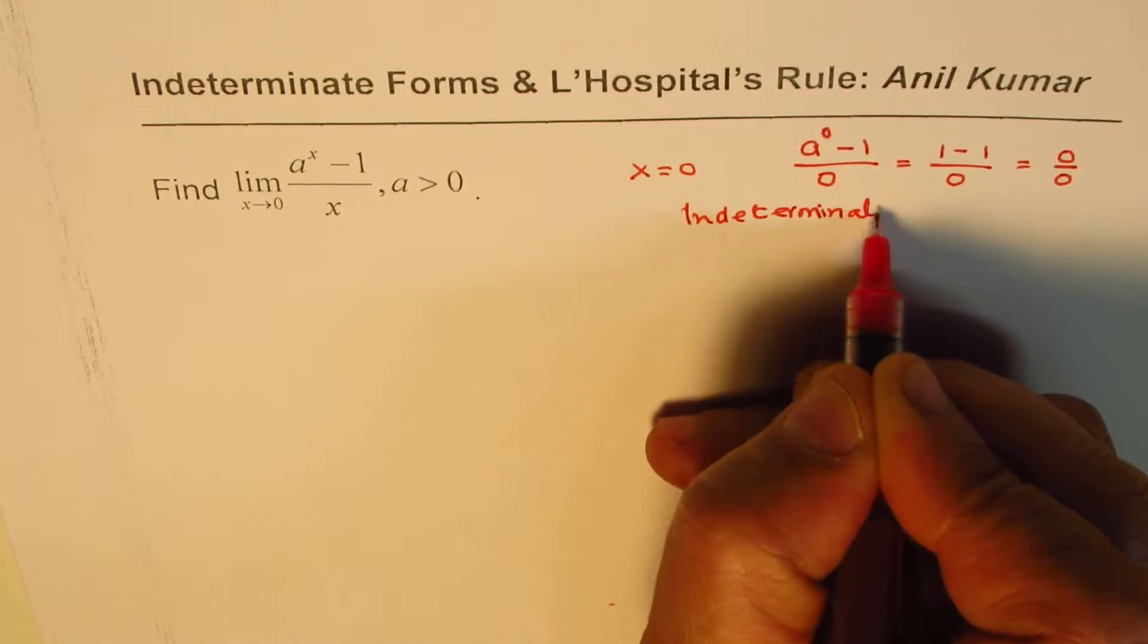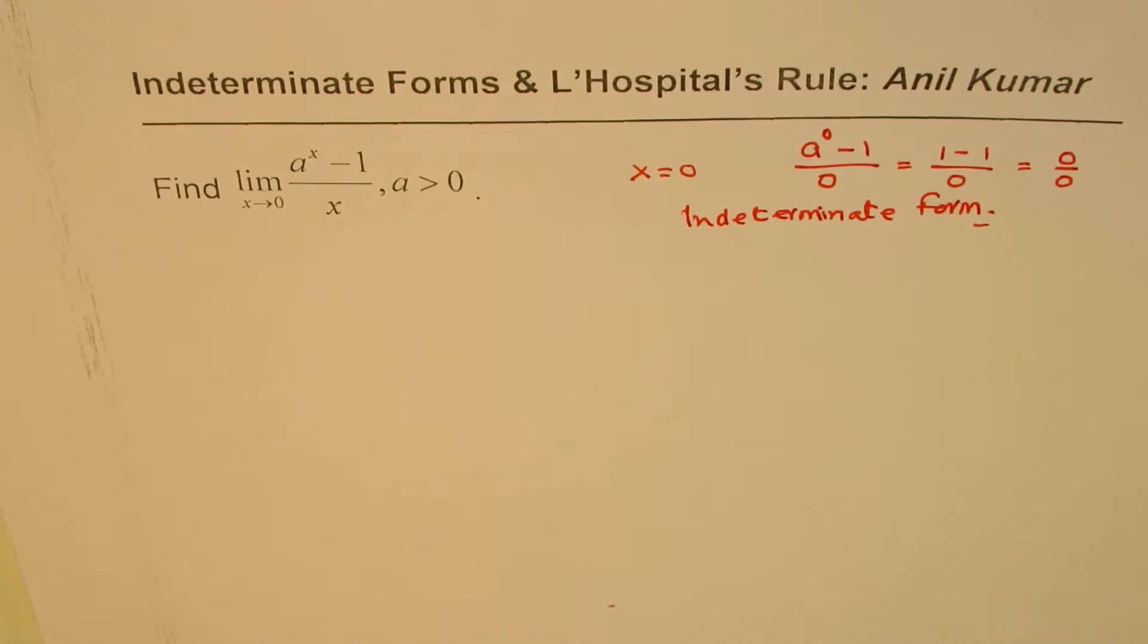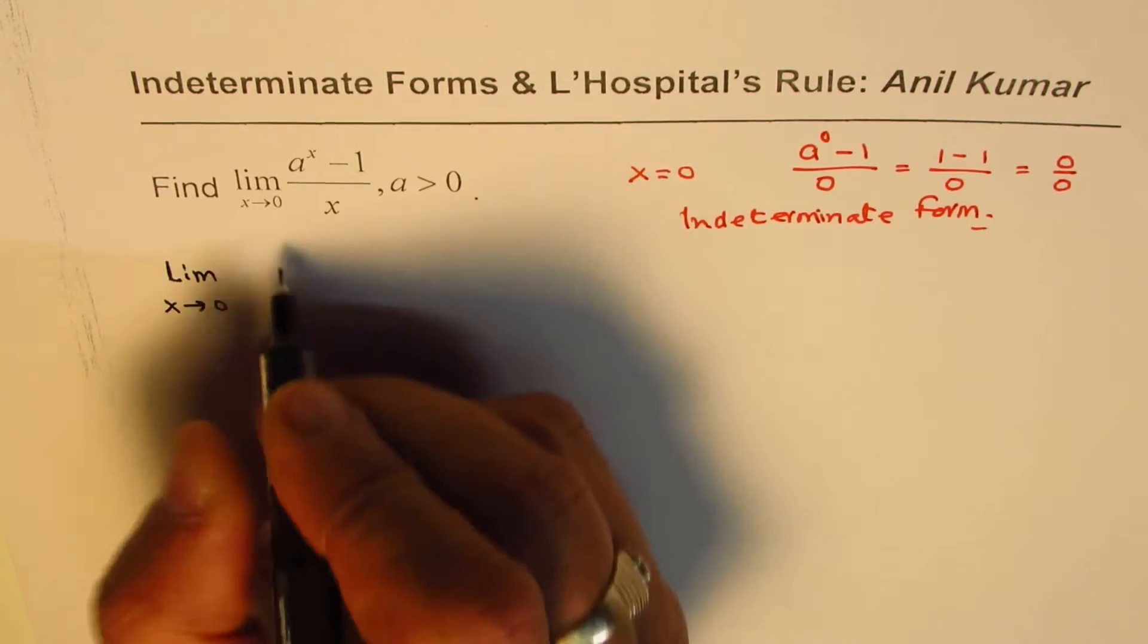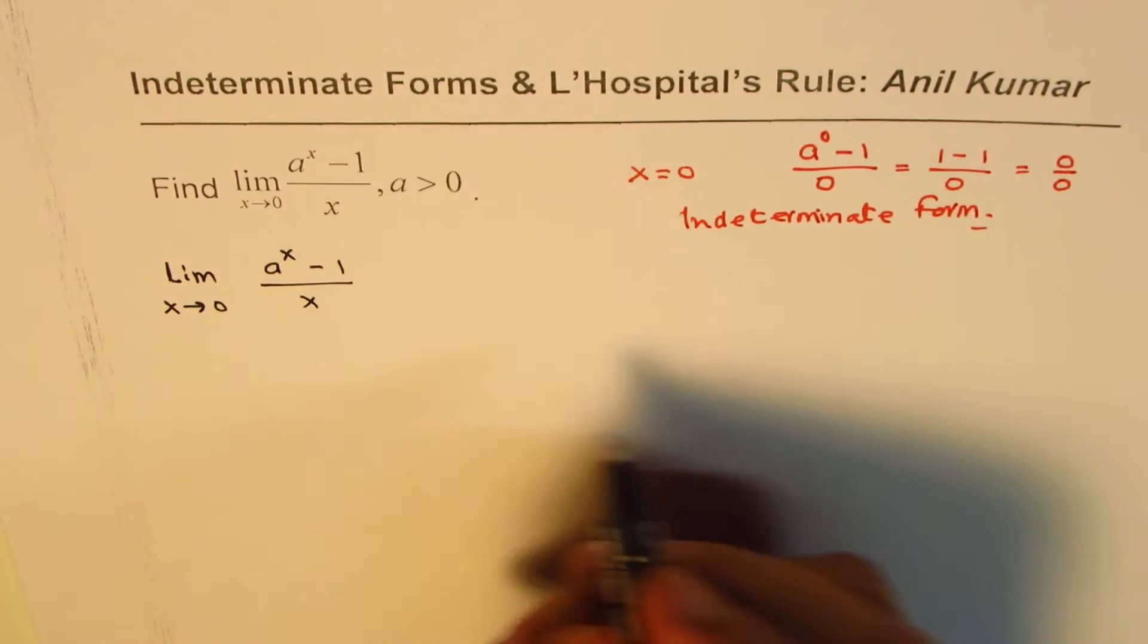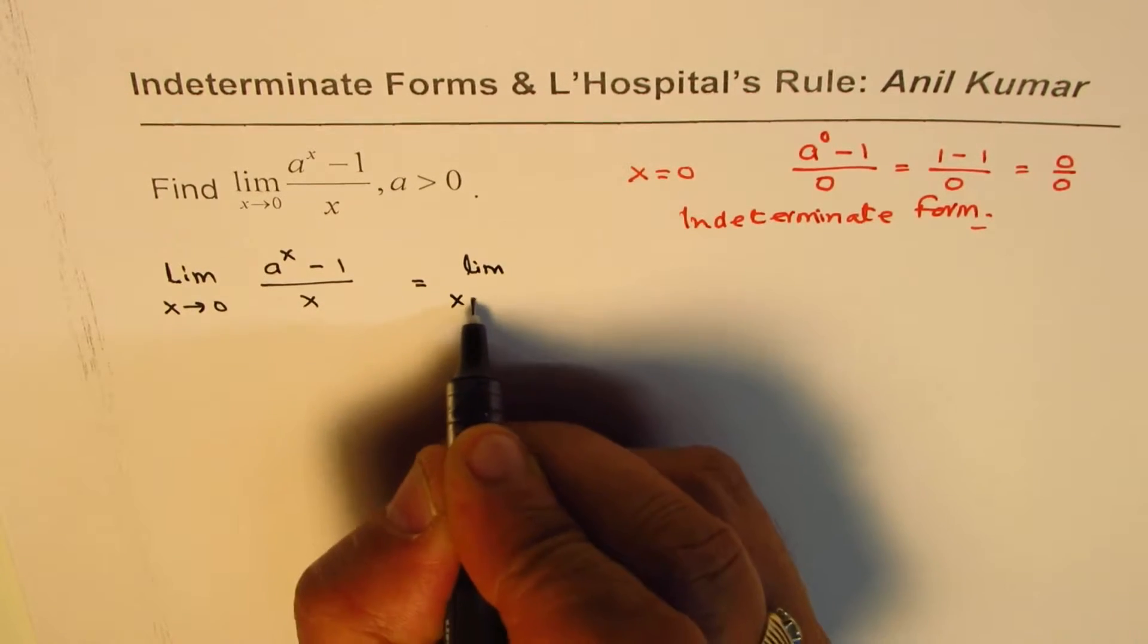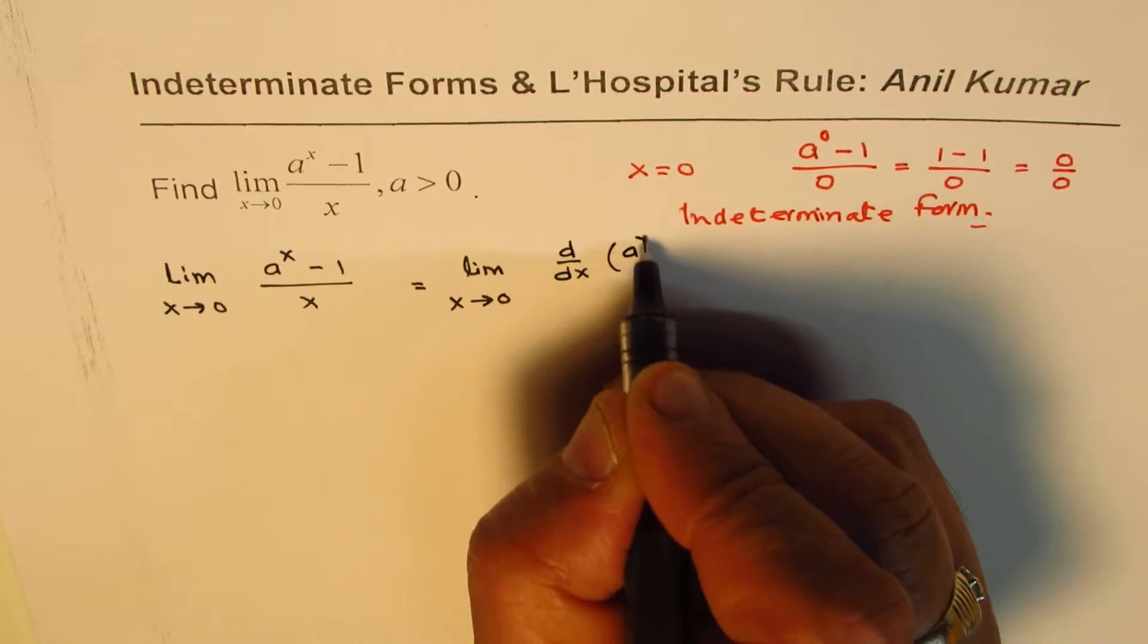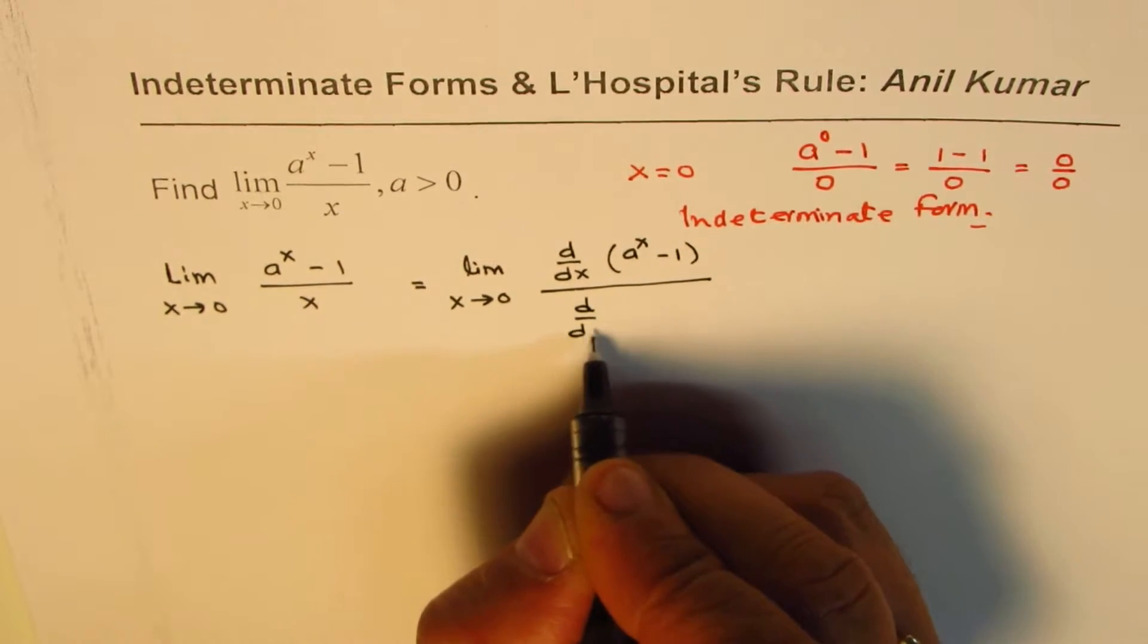Now we should apply the rule. The rule effectively is that the limit of this function, which is a to the power of x minus 1 over x, is actually equal to the limit of the quotient of their derivatives. So that is d/dx of a to the power of x minus 1 divided by d/dx of x.